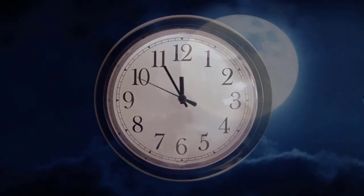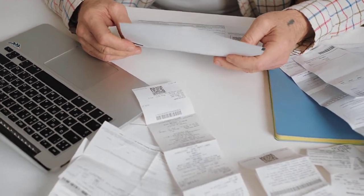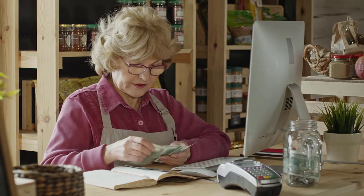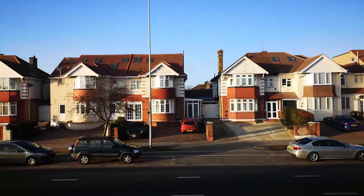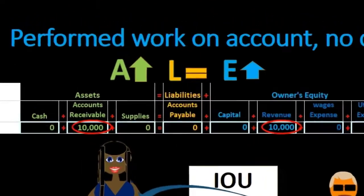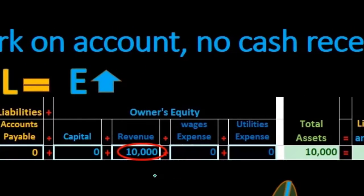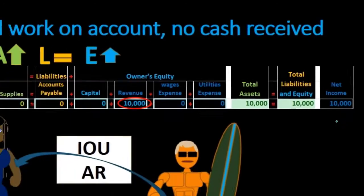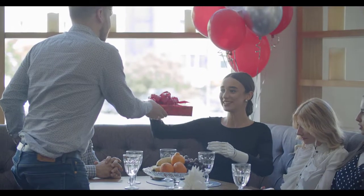Looking at the transaction: accounts receivable increases, so assets go up, and revenue increases, which increases equity. There is no effect on the liability section. Total assets equal liabilities plus equity. Net income is also going up, because revenue went up — revenue minus expenses means net income increases by $10,000.